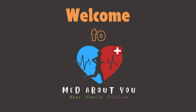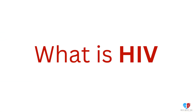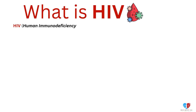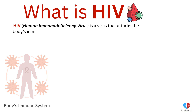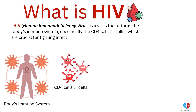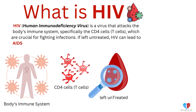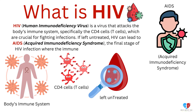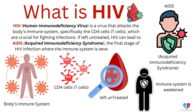Welcome to Med About You. What is HIV? HIV, human immunodeficiency virus, is a virus that attacks the body's immune system, specifically the CD4 cells, T cells, which are crucial for fighting infections. If left untreated, HIV can lead to AIDS, acquired immunodeficiency syndrome, the final stage of HIV infection where the immune system is severely weakened.